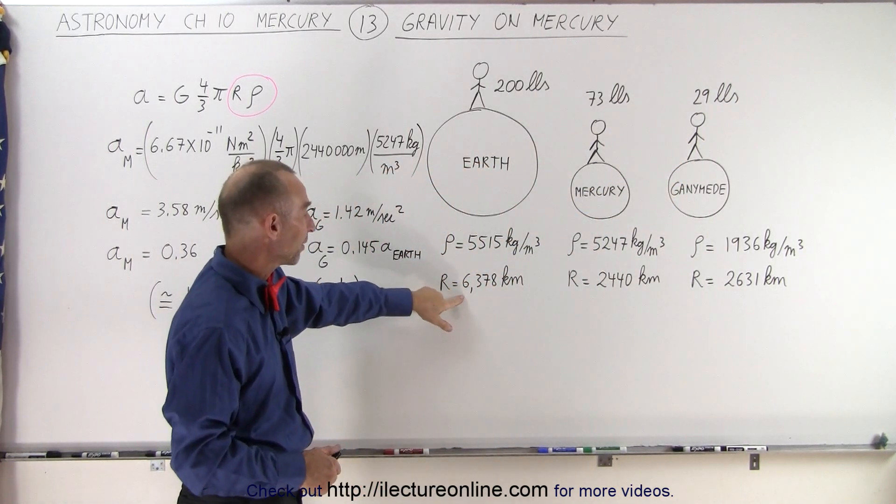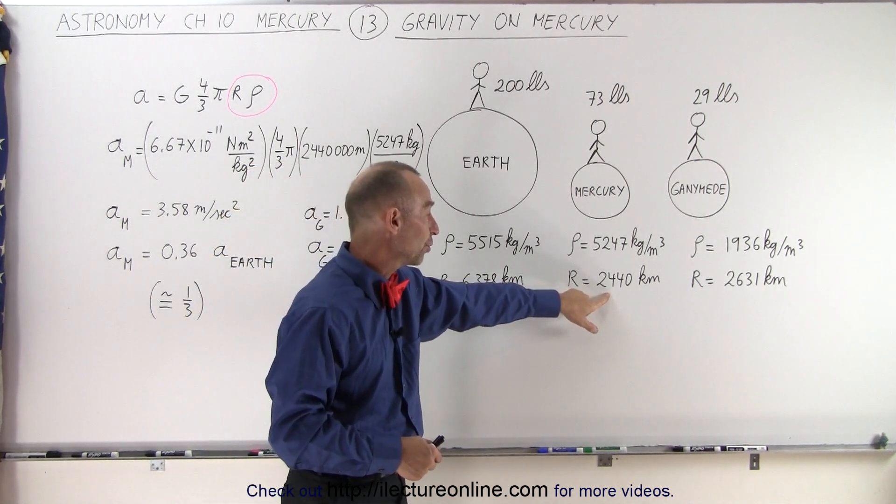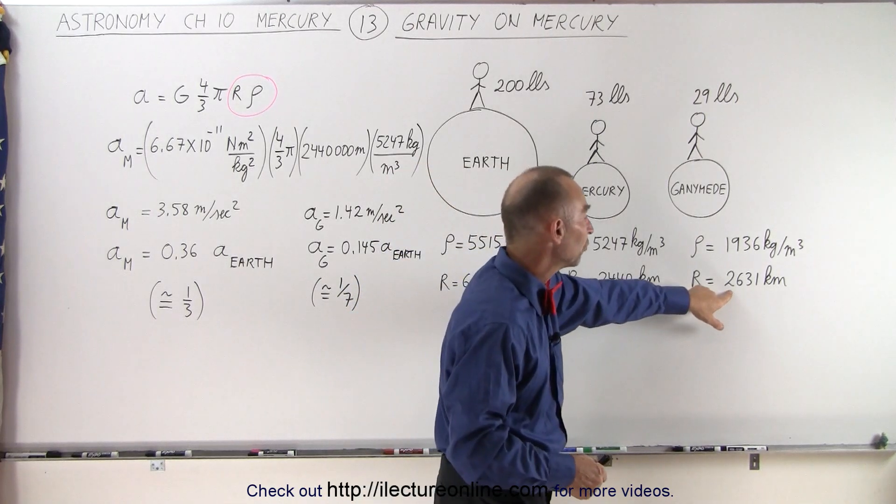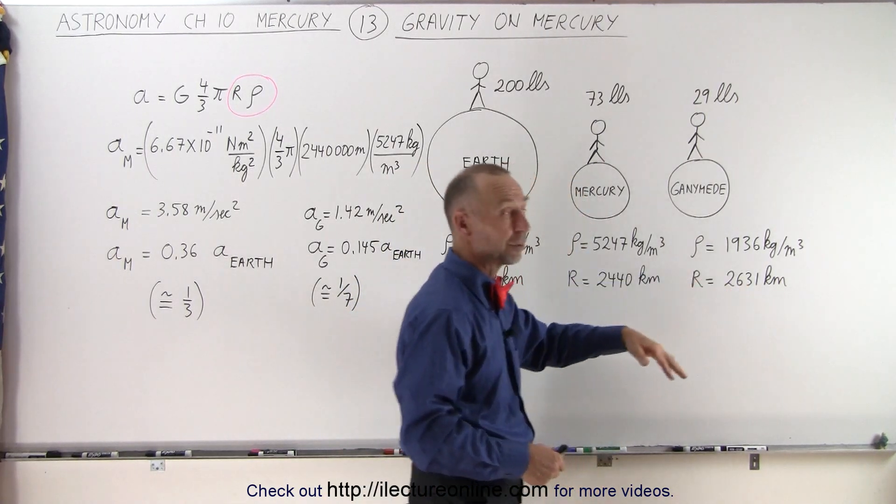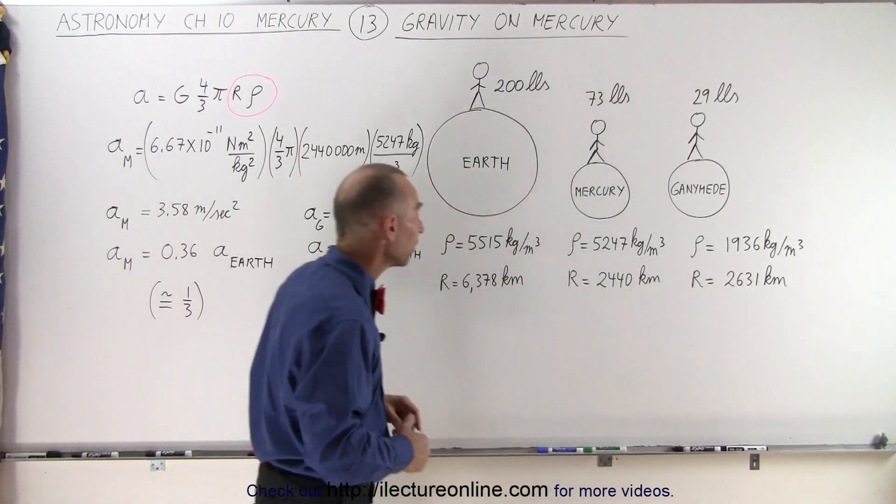Now the radius for the Earth is about 6,378 kilometers. For Mercury, it's 2,440 kilometers. And for Ganymede, it's 2,631 kilometers. So you can see that the moon Ganymede is indeed bigger than the planet Mercury.